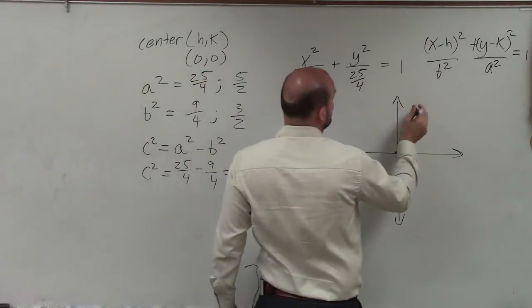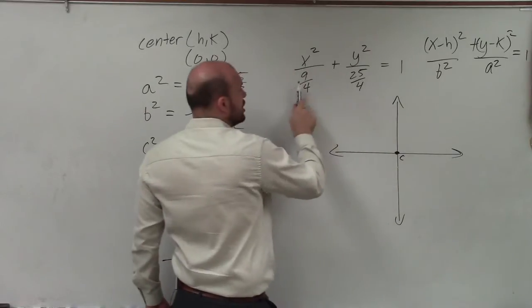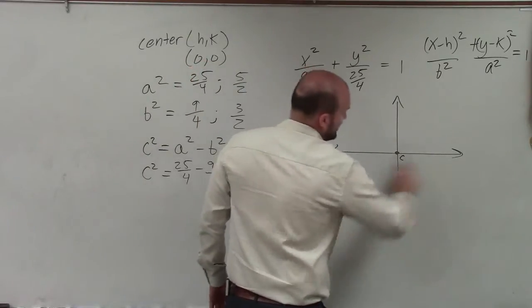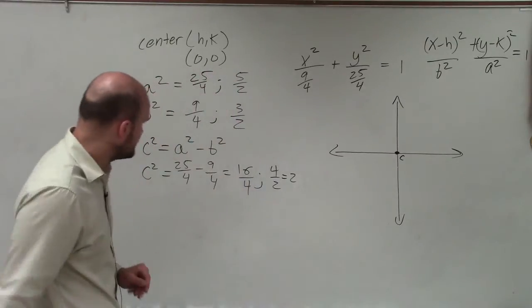When you'll have, when the larger number would be under the x², let's say there's swaps, then my major axis would be horizontal. So anyways, let's go ahead and take a look at here.